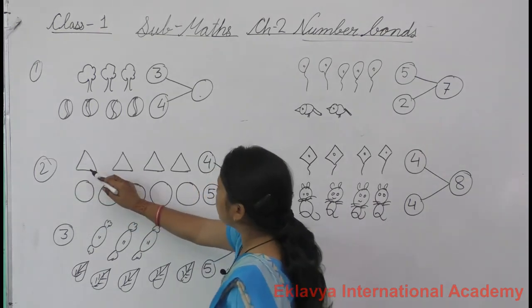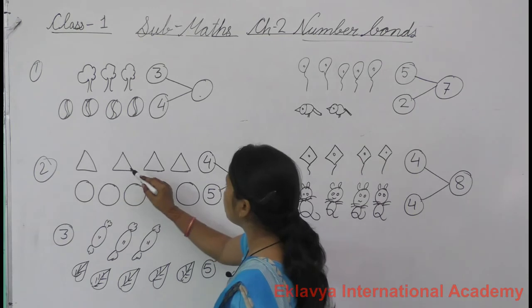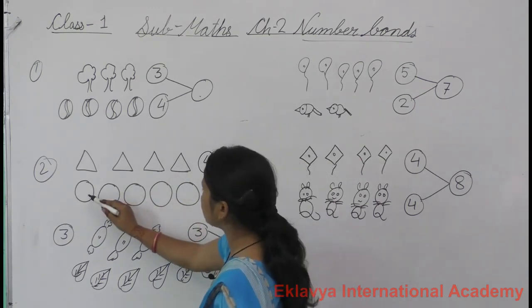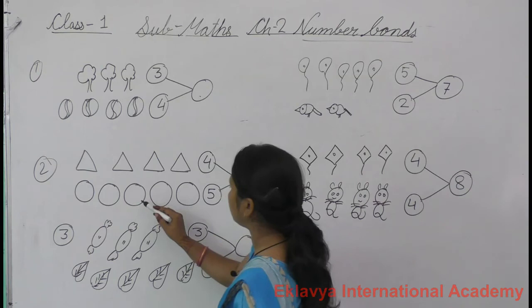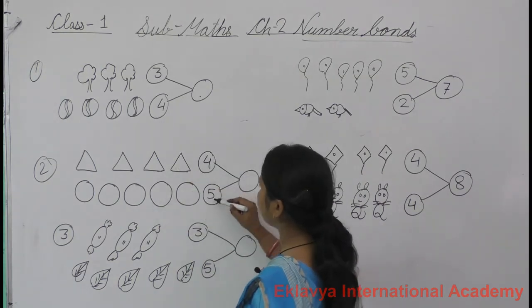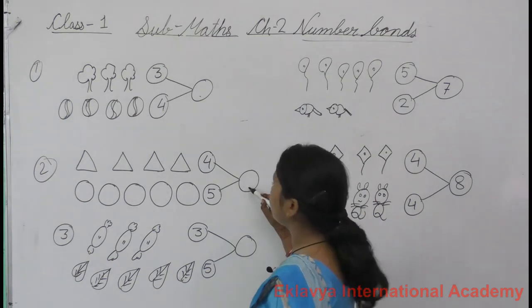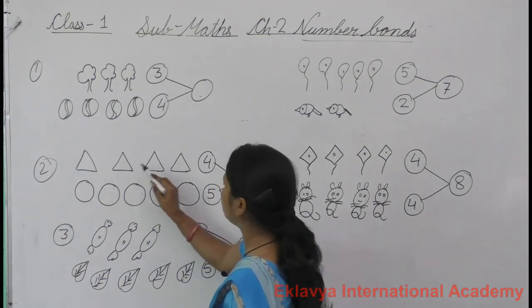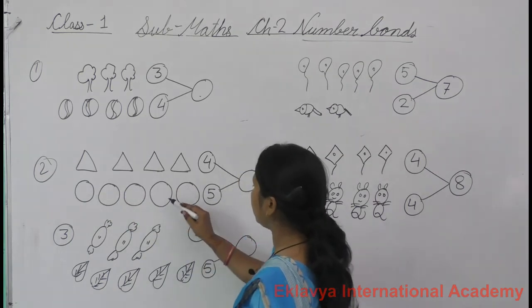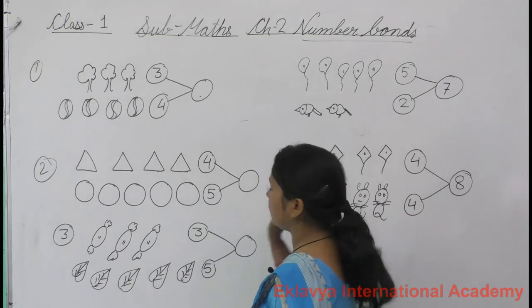Second example is triangles. Count triangles: one, two, three, four. Four triangles. And how many circles? One, two, three, four, five. Five circles. Four triangles and five circles — count and put the number. One, two, three, four, five, six, seven, eight, nine. Nine. Put the number nine.